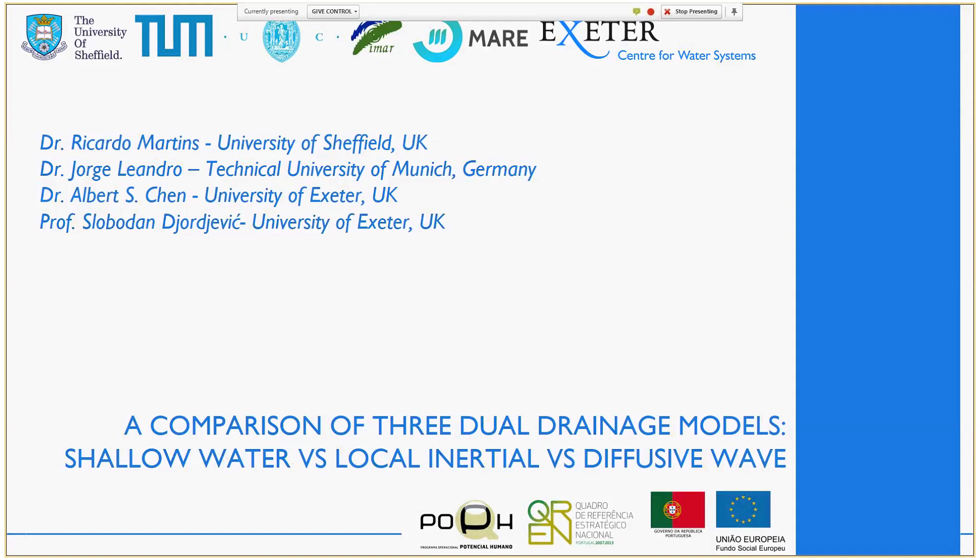The work title is as shown. It's a comparison of three dual drainage models. In this case, the surface models: shallow water, local inertial, and diffusive wave model. The goal is to compare what happens in the surface models during a flood led by a dual drainage event.